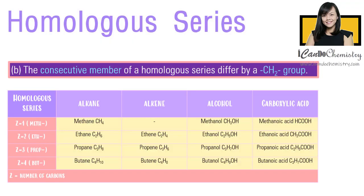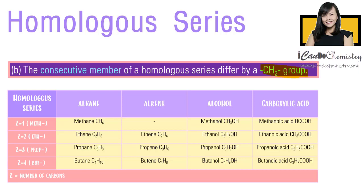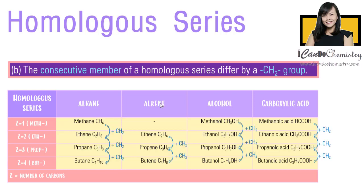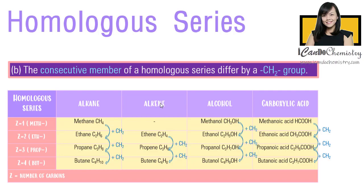Part B states that the consecutive member of a homologous series differ by a CH2 group. By stating down the formula in the table, it is very clear that in each homologous series, the next member is formed by the addition of a CH2 group.